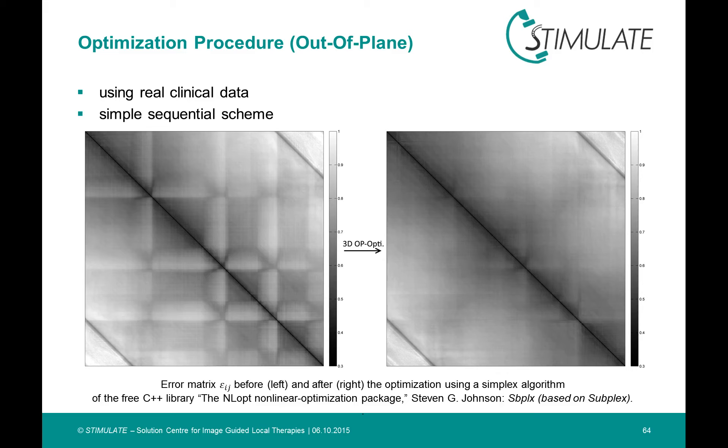After the optimization, a distinct decrease within the stripes is visible. It turns out that these are indeed the intervals where patient motion occurred.